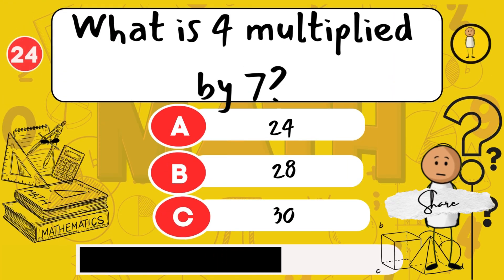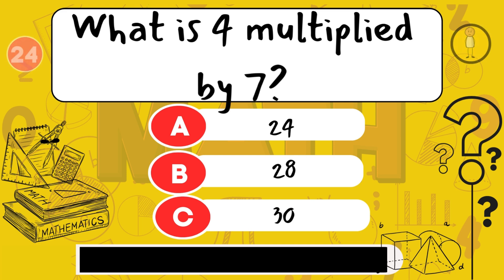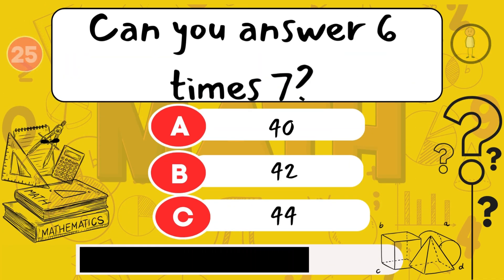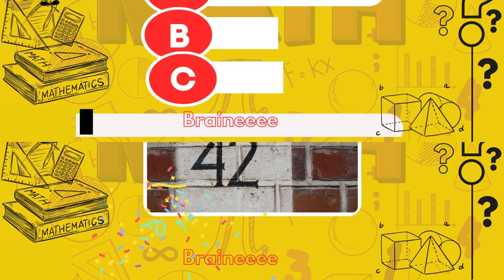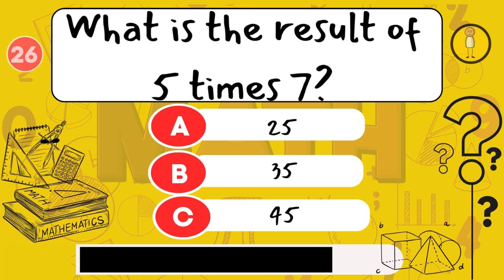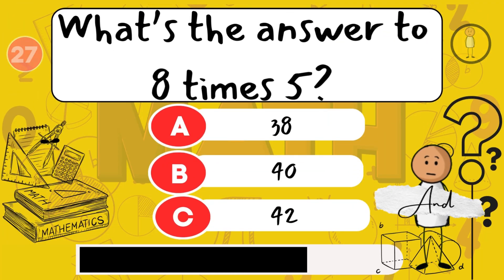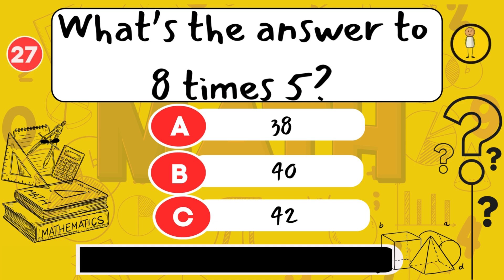What is 4 multiplied by 7? 28. Can you answer 6 times 7? 42. What is the result of 5 times 7? 35. What's the answer to 8 times 5? 40.